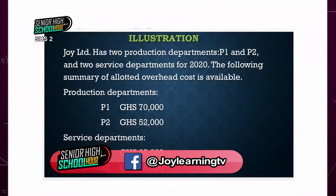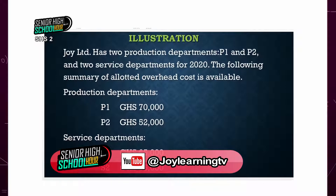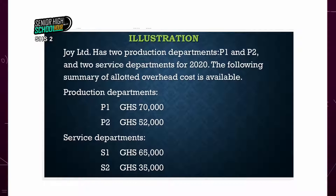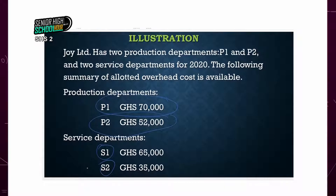This is the illustration for today — how to redistribute the service cost center overhead among all the departments in an organization, including the service department. Joy Limited has two production departments: production department one and department two — P1 and P2 — and two service departments for 2020. The following summary of allotted overhead costs is available. We have production department one and two, and service departments represented by X1 and X2, that is service department one and service department two, and we can see the total allotted to each department.